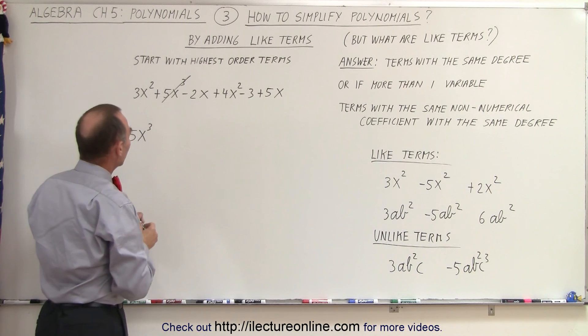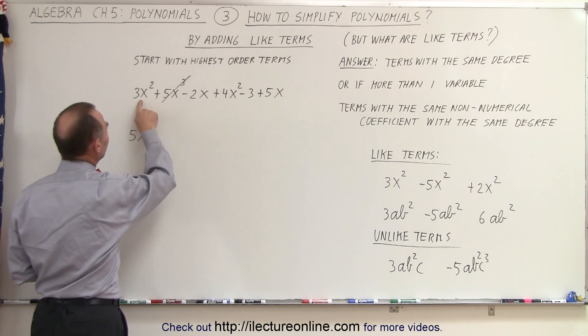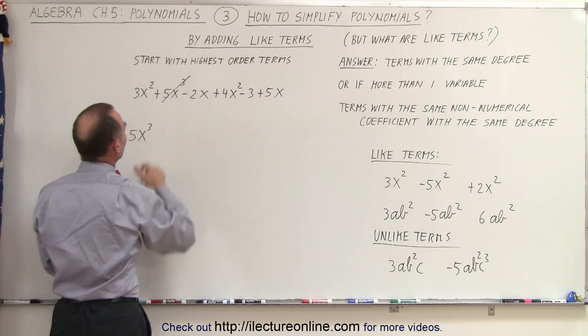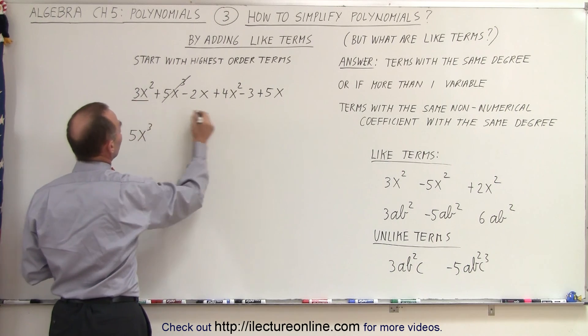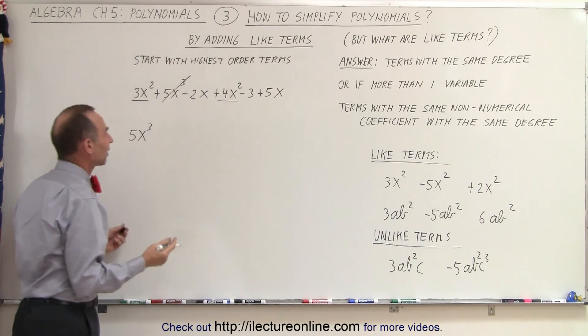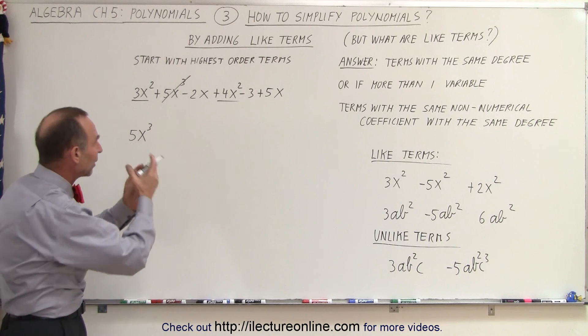Now, I look for the next power, which is the power 2. And notice I have two terms, this one and this one, they're both the same. So we have 3x², we have 4x². I can simplify that polynomial by adding those two together.